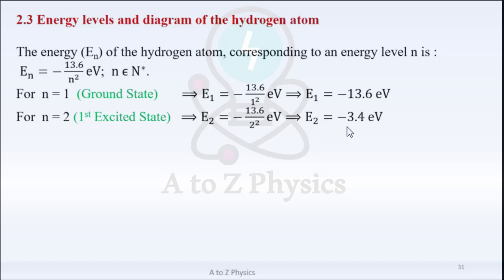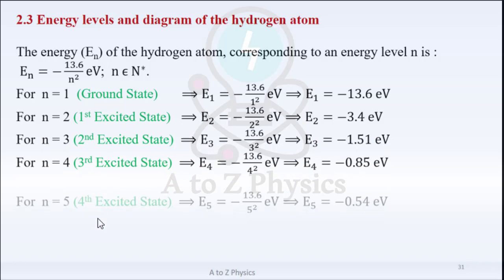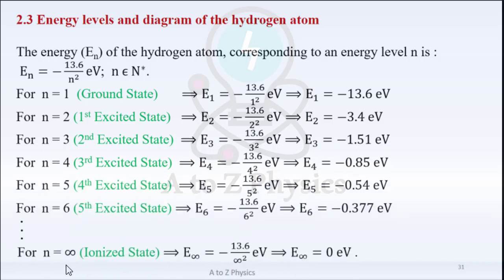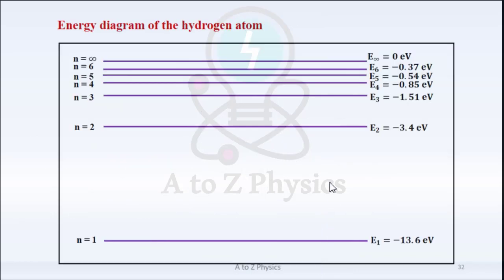For N = 2: E2 = −13.6/4 = −3.4 eV, which corresponds to the first excited state, and so on. For N equal to infinity, we get E∞ = 0 eV, which corresponds to the ionized state. This figure shows a simplified diagram of the energy levels of the hydrogen atom based on the calculated values. Keep in mind that the energy levels are not equally spaced.